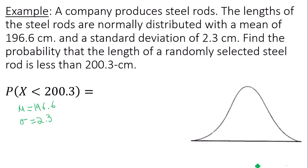In the center of my bell curve, I need to label my mean 196.6. I'm looking for the probability or area under the curve that is to the left of 200.3. So label 200.3 on your x-axis. It is greater than 196.6.